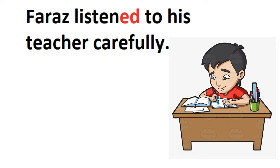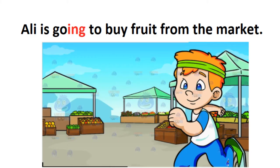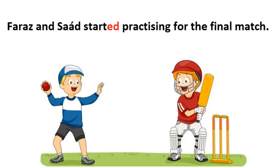फिर phrase है: 'listen to his teacher carefully.' फراज जो है वो बहुत ध्यान से उस्ताद की बात सुनता है, इसलिए वो घर आकर बैठकर revision करता है और homework करता है। 'Listen' से मतलब है कि classroom में उसने बहुत अच्छे तरीके से सुना। फिर है: 'Ali is going to buy fruit from the market' — Ali market से fruit खरीदने जा रहा है। 'Go' से -ing लगाया तो पता चलता है कि वो ये काम कर रहा है।